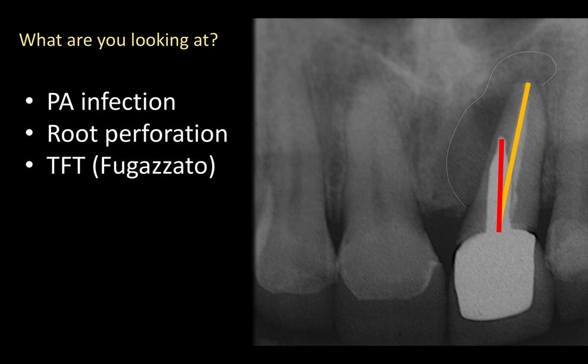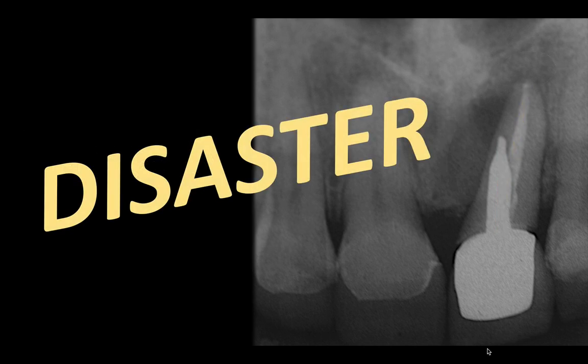As Dr. Fugazano says, it's TFT — time for titanium. It's time to extract this tooth, clean out the infection, and replace it with an implant. What you're really looking at is total disregard of the root anatomy while preparing the post space, and that's obviously unfortunate. Things happen but they are preventable, and what we have now is a disaster in the aesthetic zone — that's really the topic of this video.